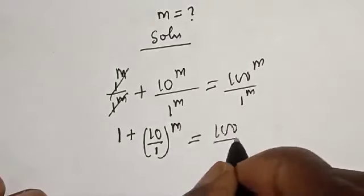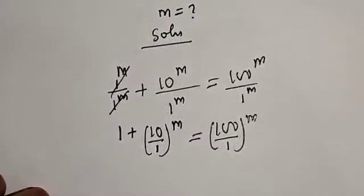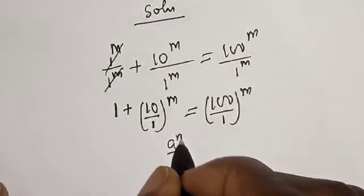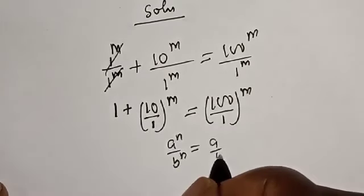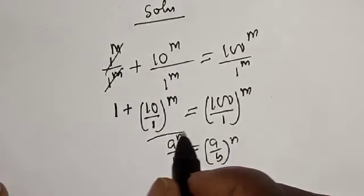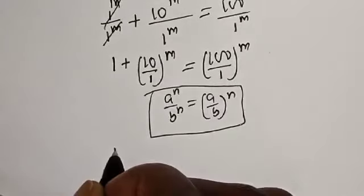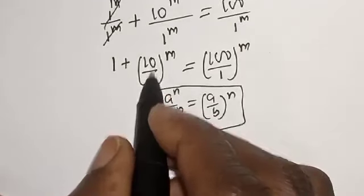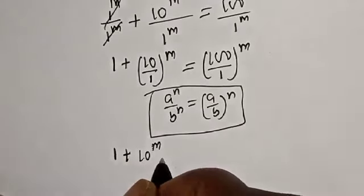That comes from the rule: if you have a^m over b^m, this is equal to (a/b) to the power of m. So that is how we get 1 plus (10/1)^m, which is 1 plus 10^m, is equal to (100/1)^m, which is 100^m.